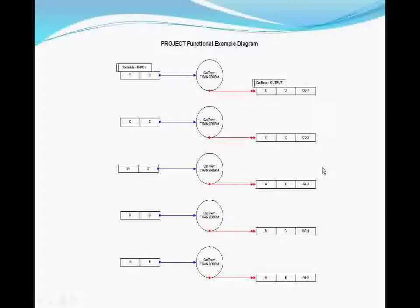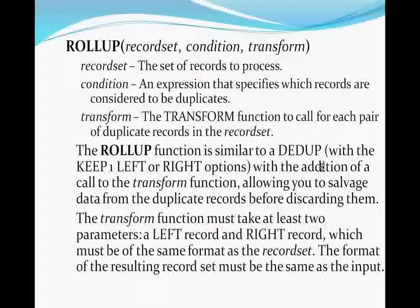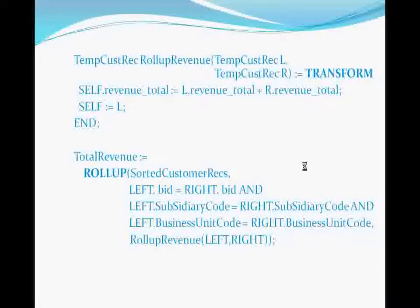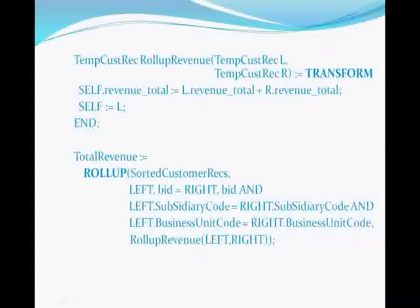Another commonly used transform function is rollup. Rollup is similar to dedupe, but instead of simply eliminating duplicate records, rollup passes the matching records to a transform function allowing you to create a best composite record by letting you cherry pick which data to keep from each record — it all depends on how you write your transform function. Note that the transform function's result type record structure and the left and right input structures are exactly the same. This is always the case with a transform for a rollup operation. Rollup only checks contiguous records, so the input record set must be sorted so that the duplicate records are together.